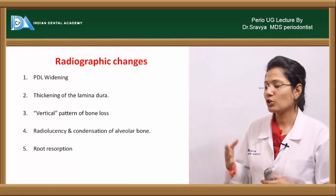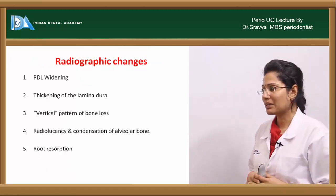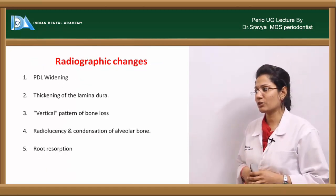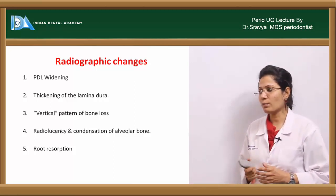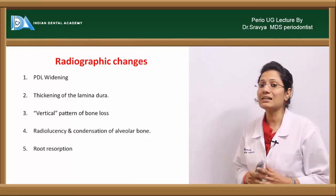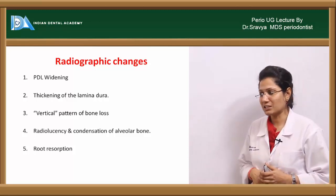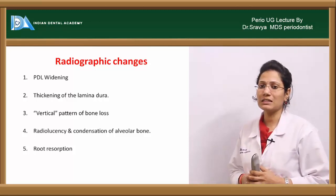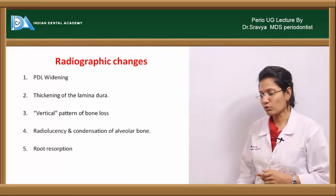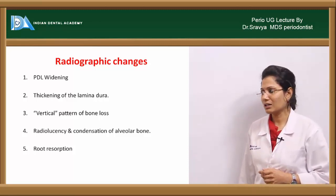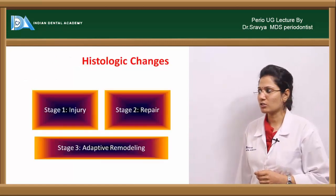The radiographic changes include PDL widening — that is, widening of your periodontal ligament space seen on a radiograph. You can also see thickening of the lamina dura or alveolar bone proper, a vertical pattern of bone loss, or an intra-bony defect. Additionally, radiolucency and condensation of the alveolar bone and root resorption can be seen as radiographic changes in trauma from occlusion.